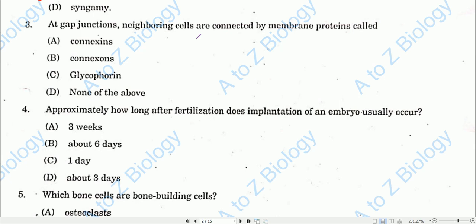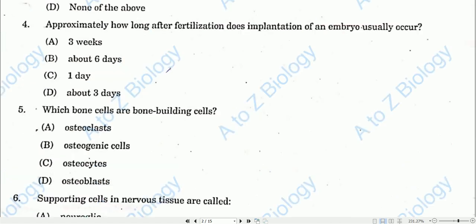Question number three: At gap junctions, neighboring cells are connected by membrane proteins known as connexins. Option B will be the correct one. Question number four: Approximately how long after fertilization does implantation of an embryo usually occur? After six days, implantation usually occurs, so option B will be the correct one.